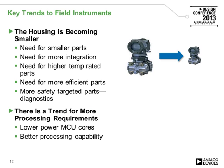So what are some of the key trends for these field transmitters? One is the housing is becoming smaller, which drives a need for smaller parts and higher integration so there are fewer parts. Also, because housings are becoming smaller, the electronics may sit closer to a hot fluid, pushing the need for higher temperature rated parts as well. In some cases, this also leads to a need for more efficient parts to keep power generated by the electronics to a lower level. There is also a trend for more processing requirements, driven partly by the need for more safety and diagnostic features. This leads to the need for lower power MCU cores and also better, more efficient processing capabilities.